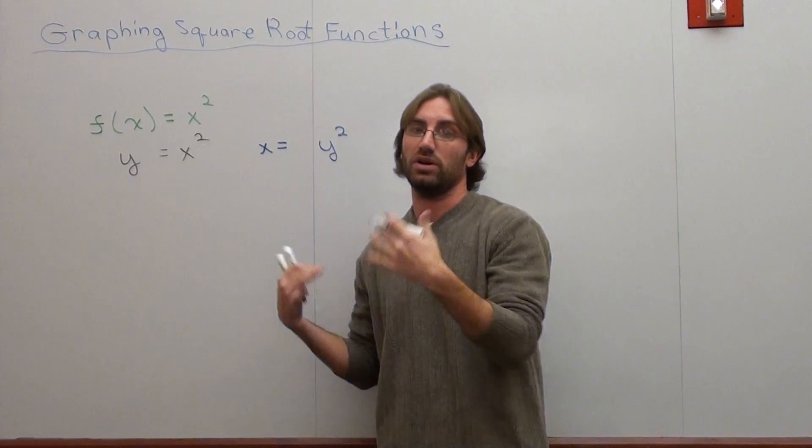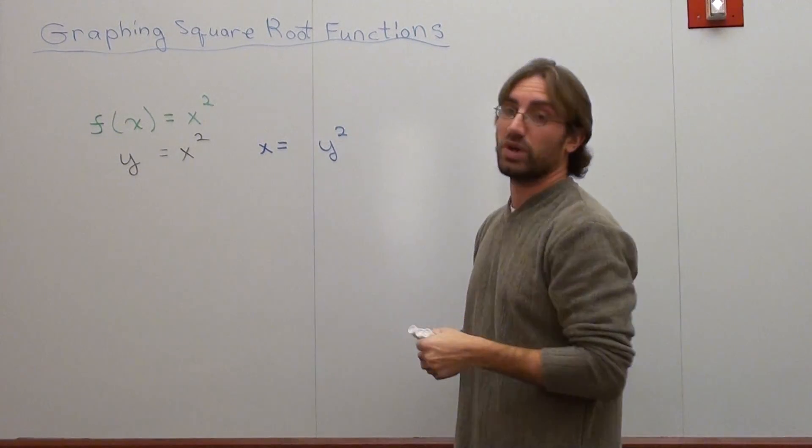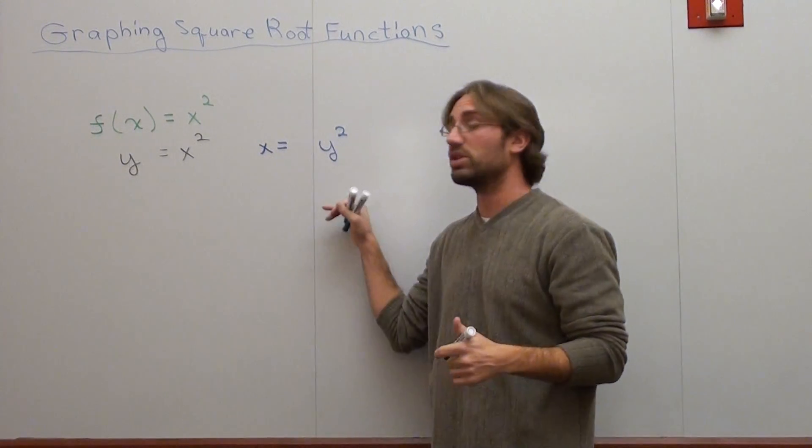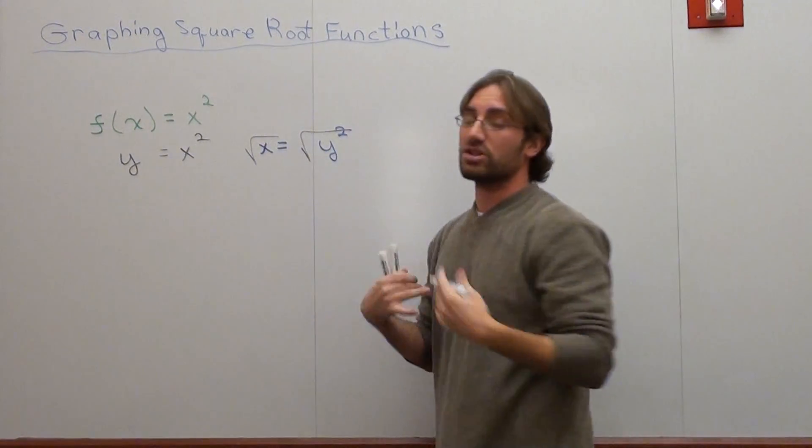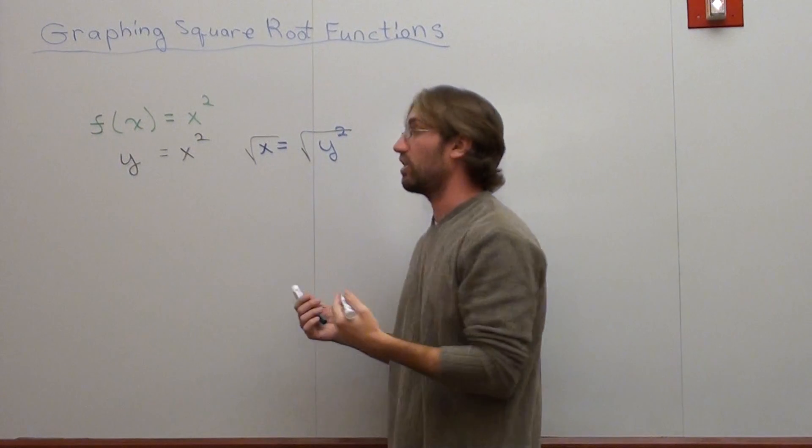But I'm still going to be solving for the y. So when I do that, I've got to take the square root of both sides to get y by itself, and when I take the square root of both sides, I've got to account for the good and the bad.